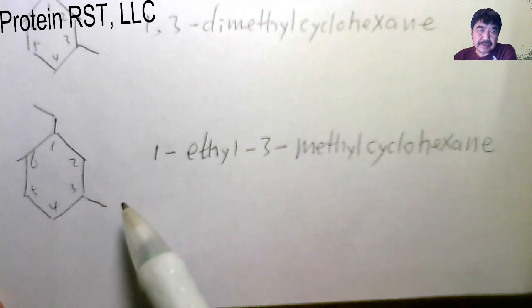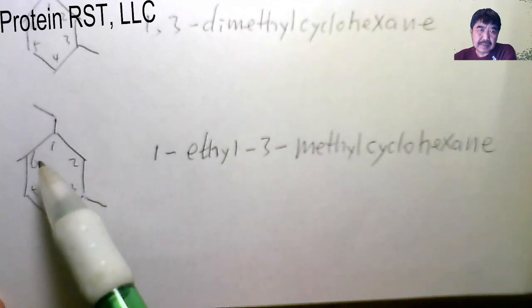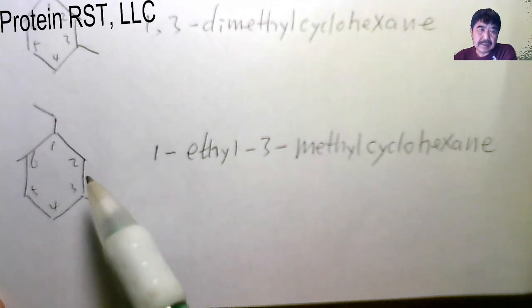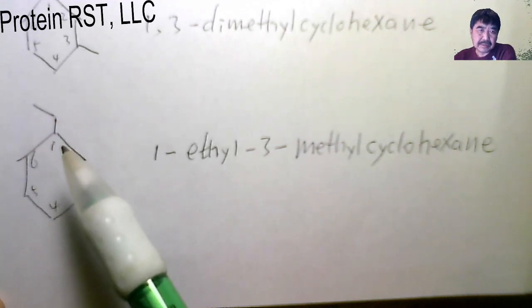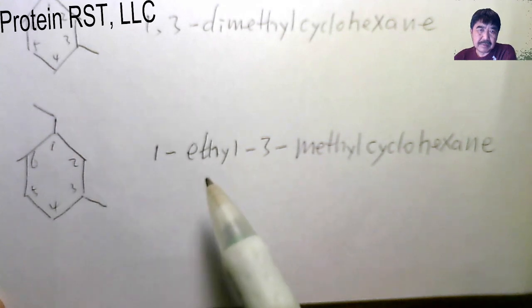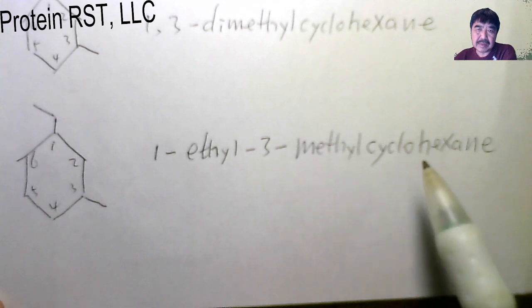This example also has a ring with six carbons, but they have two different substituents. At one position, there's the ethyl group. At three position, methyl group. So it's called 1-ethyl-3-methyl cyclohexane.